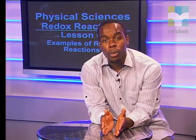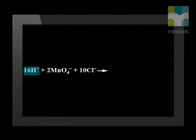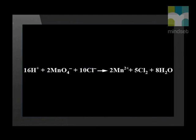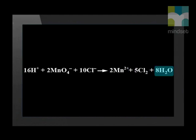Let's discuss the theory further. In the reaction, when potassium permanganate reacts with warm concentrated hydrochloric acid, a greenish-yellow gas forms. Let's look at the net ionic equation to see what has happened: 16 hydrogen ions, 2 permanganate ions, and 10 chloride ions react to form 2 manganese 2+ ions, 5 chlorine molecules, and 8 water molecules.